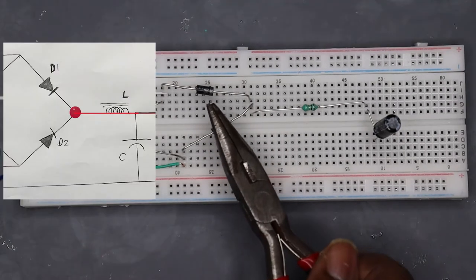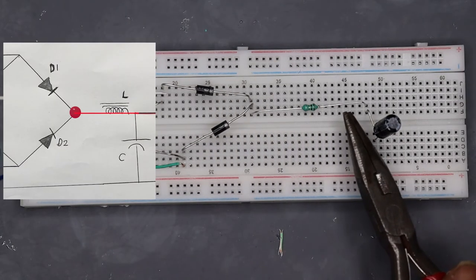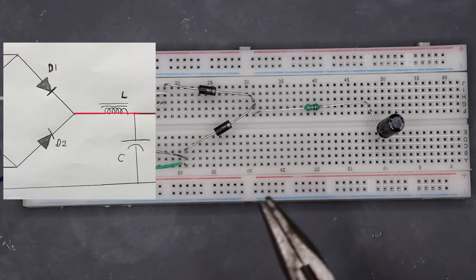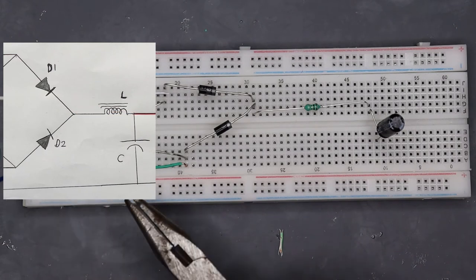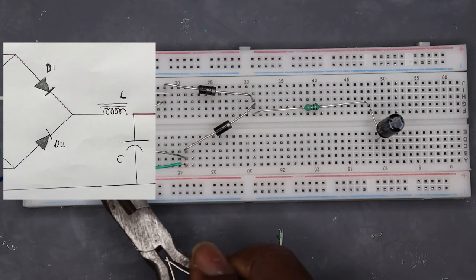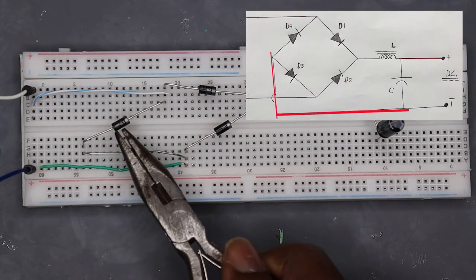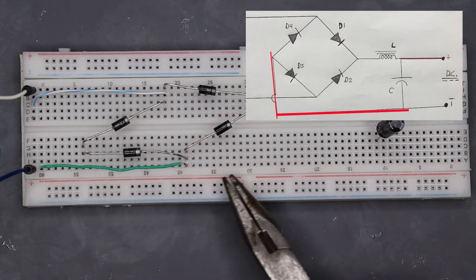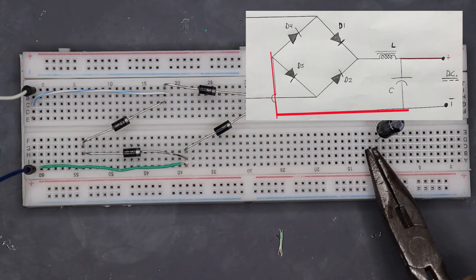Now the cathode-cathode connection of D1 and D2 is connected to the inductor coil, and from the inductor coil it's connected to the capacitor. Now we need a connection from the anode-anode of D4 and D3 to the negative end of the capacitor.